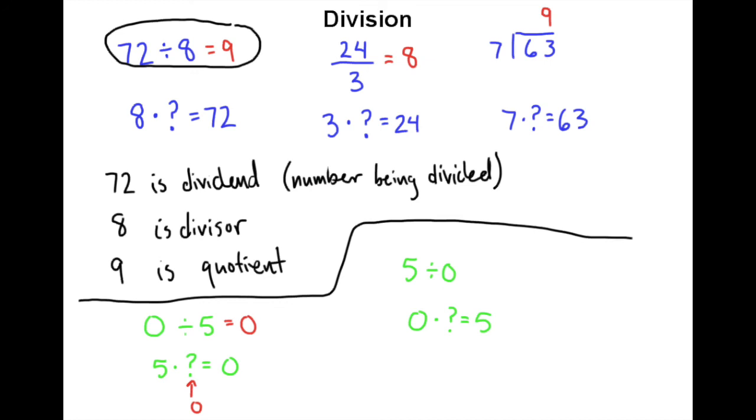But there's a bit of a problem here because we know that 0 times anything is 0. So no matter what you made this question mark there's no way you could ever make 0 times that thing equal 5. So we'll just know here that nothing works. And so what that means is that this division problem I wrote up here doesn't really have an answer. And so what we say is 5 divided by 0 is undefined.